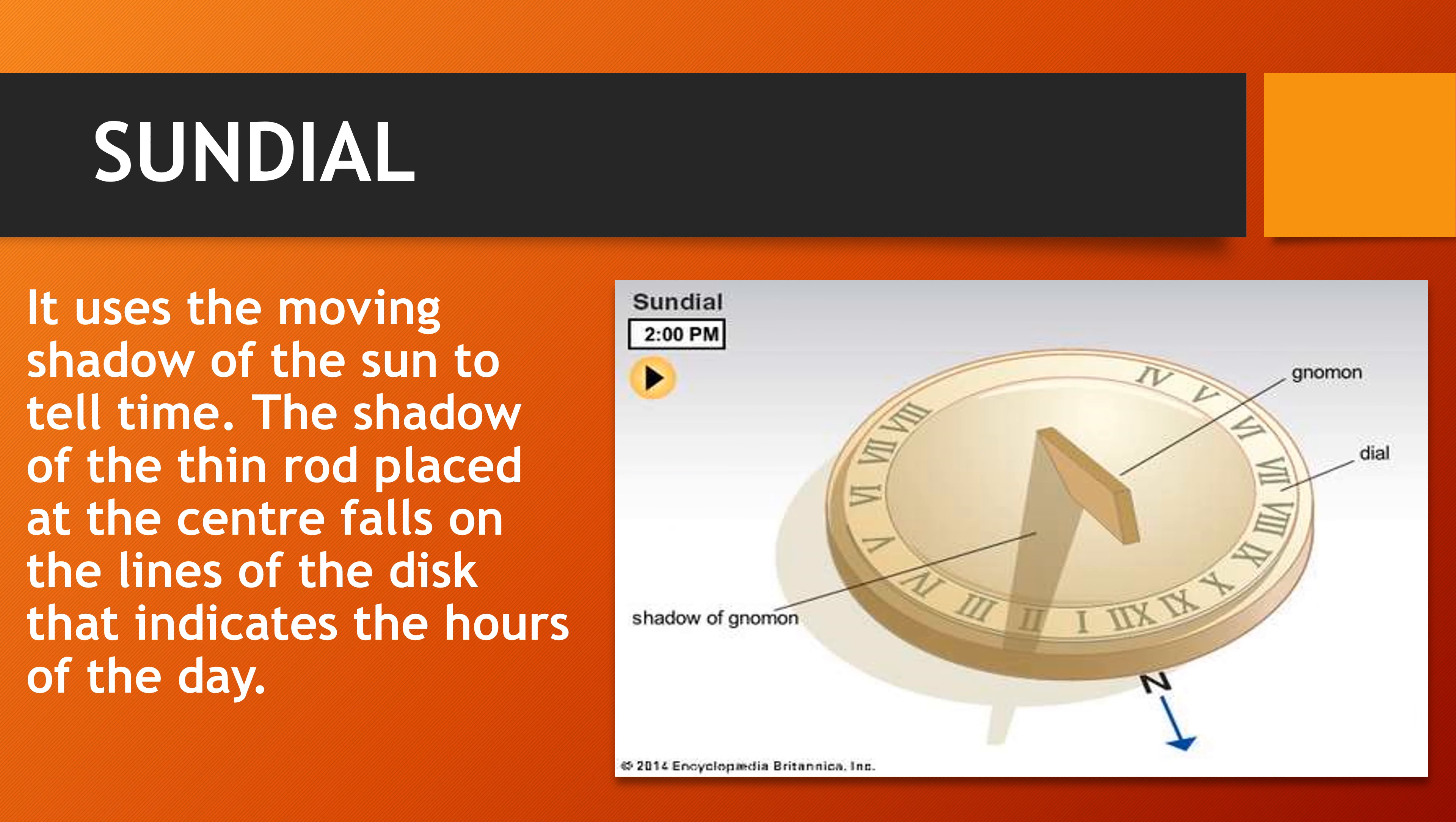First of all, we will talk about sundial. It uses the moving shadow of the sun to tell time. The shadow of the thin rod placed at the center falls on the lines of the disk that indicates the hour of the day. You can see here, in this clock there is a shadow and due to this shadow we can get the time, that is 2 o'clock.